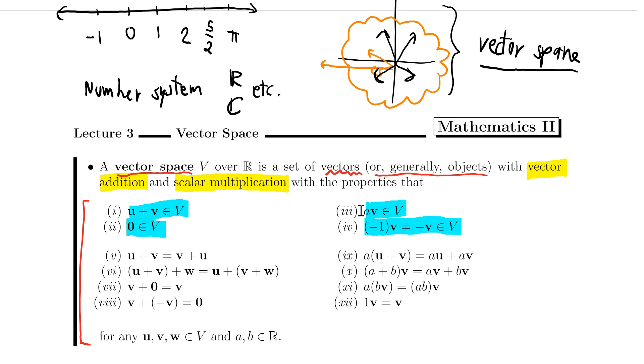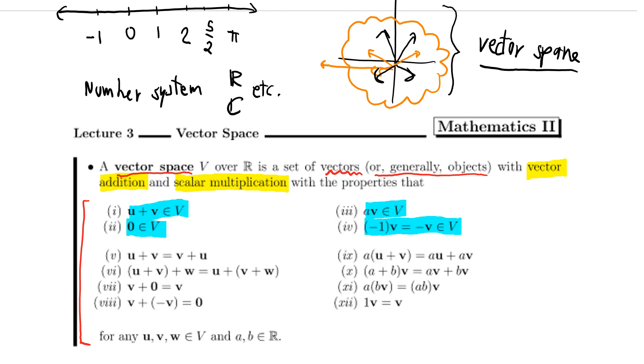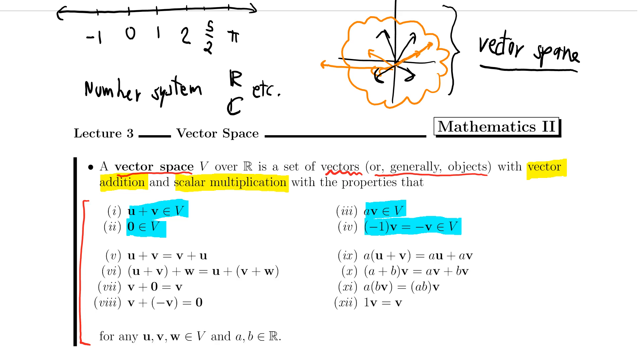I want the scalar multiplication of a vector to be a vector. So if I multiply a vector by a number, by a scalar, it should also remain inside my universe. So I don't want my vector when it multiplies with a big number to fall outside. I don't want that to happen.